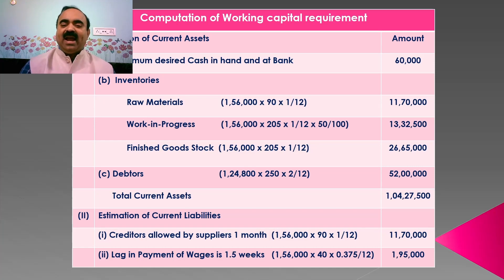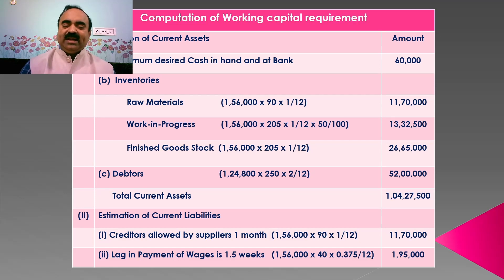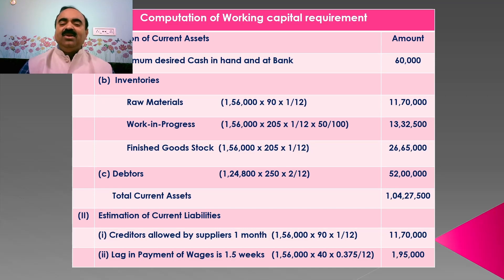Minimum desired cash in hand and at bank is given as Rs. 60,000. The second component of current assets is inventories, which consist of raw materials, work in progress, and finished goods stock. The investment in raw materials is determined by multiplying the level of activity of 1,56,000 with per unit cost of raw material, that is Rs. 90, and since raw materials are in stock for one month, we multiply with 1/12. We derived the raw material amount as Rs. 11,70,000.